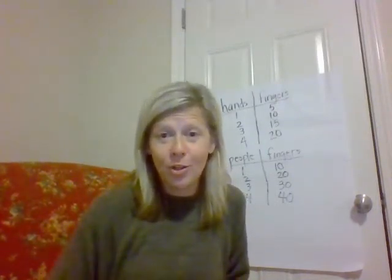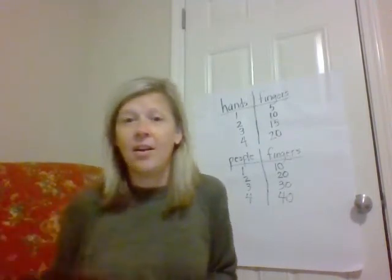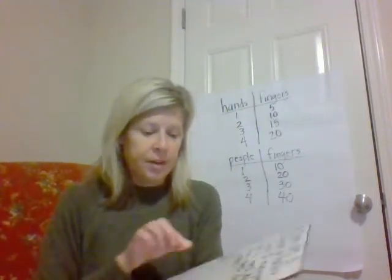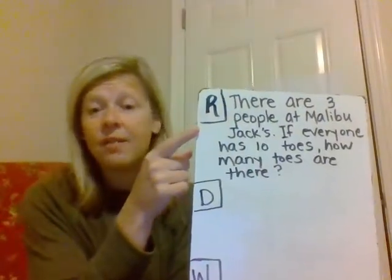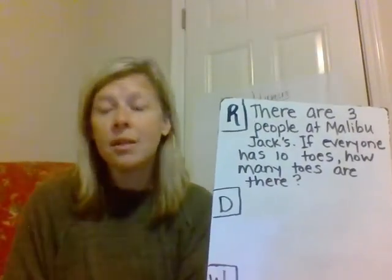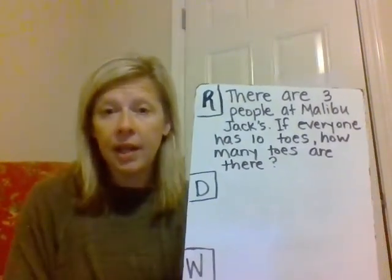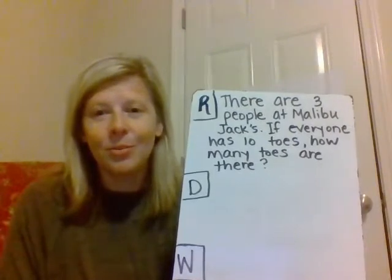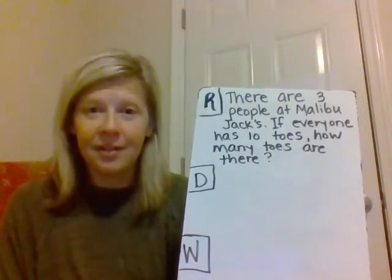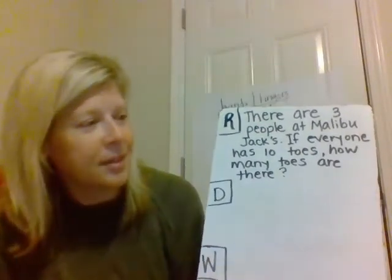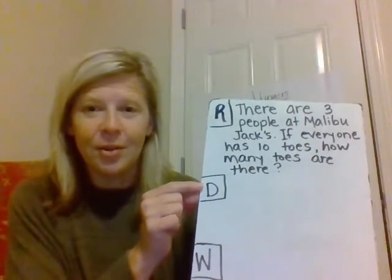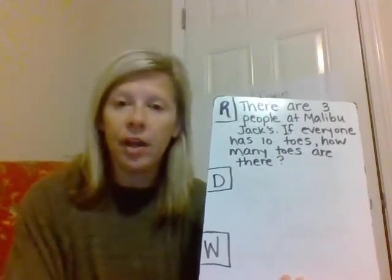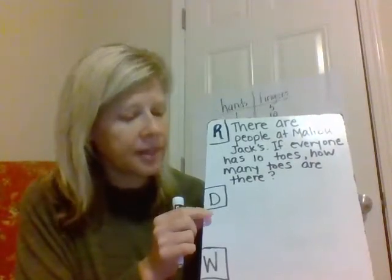This is where you're going to need your paper or your dry erase board. I already have a word problem written, and it's going to be very similar to what you're going to do in your workbook sheet today. The first thing we're going to do is R — that R means, if you're in my class, you know — that R means just to read the problem. We're going to read it and determine what is the important information. There are three people at Malibu Jacks. If everyone in that group has 10 toes, how many toes are there? If you're in my class, what does that D stand for? Draw.